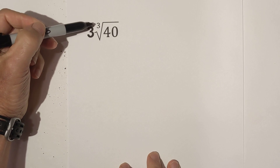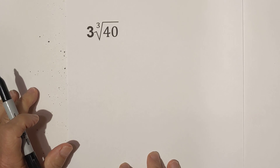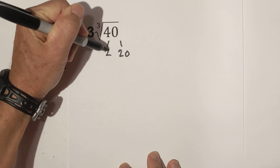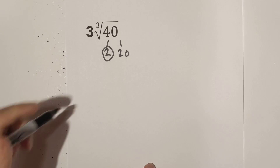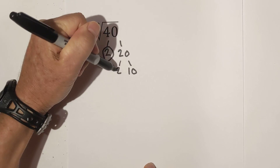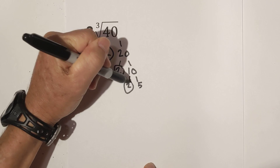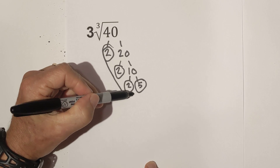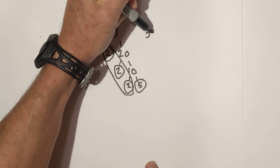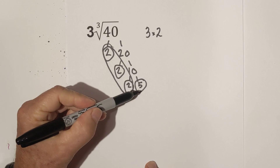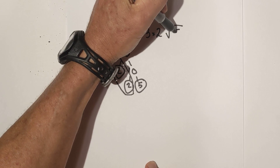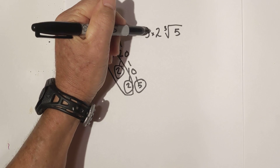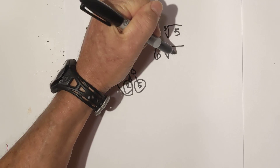We have a 3 on the outside and then the cube root of 40 — and remember, this approach also works for a square root. We create a factor tree: 2 times 20, circle the 2 because it is prime, then 2 times 10, circle the 2, and then 2 times 5. We pull out triplets: we have three 2s, so they come out. But we already have a 3 on the outside, so it becomes 3 times 2. What's left inside is the cube root of 5. Multiplying 3 times 2 gives 6 cube root 5.